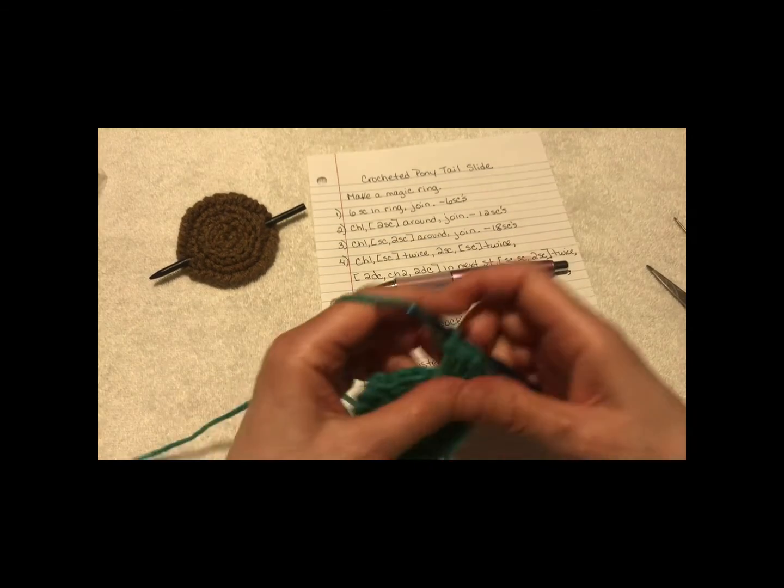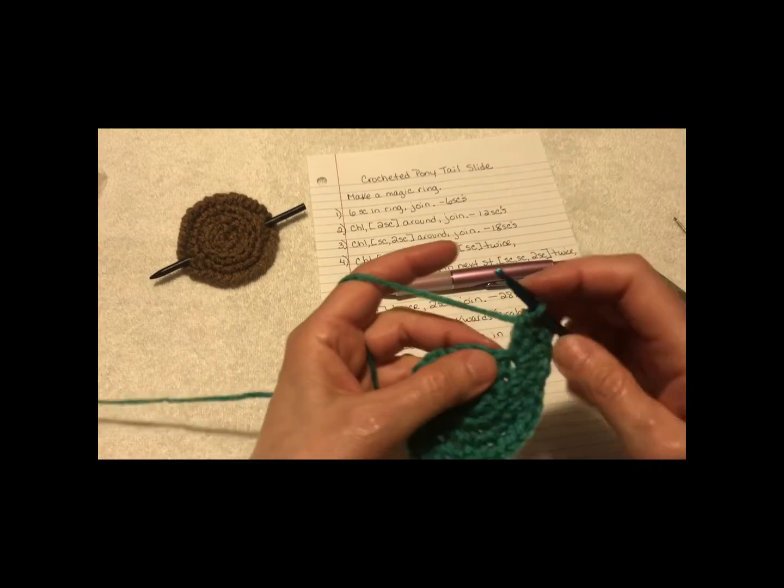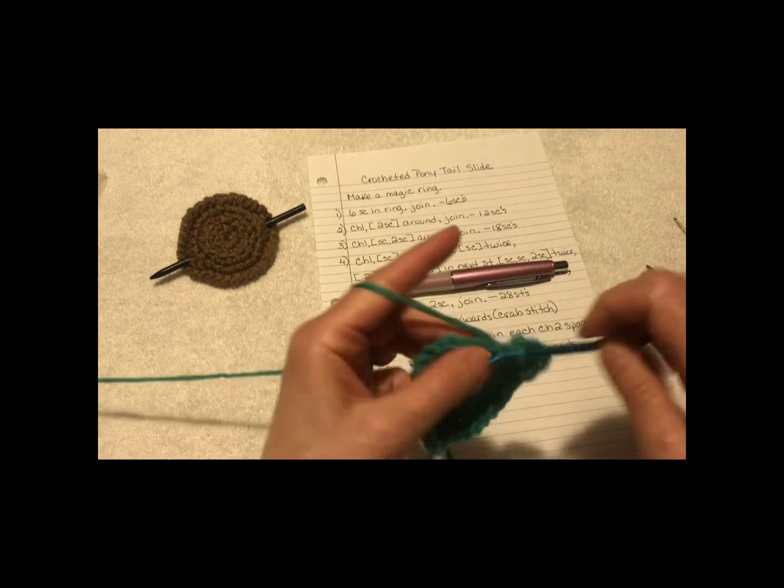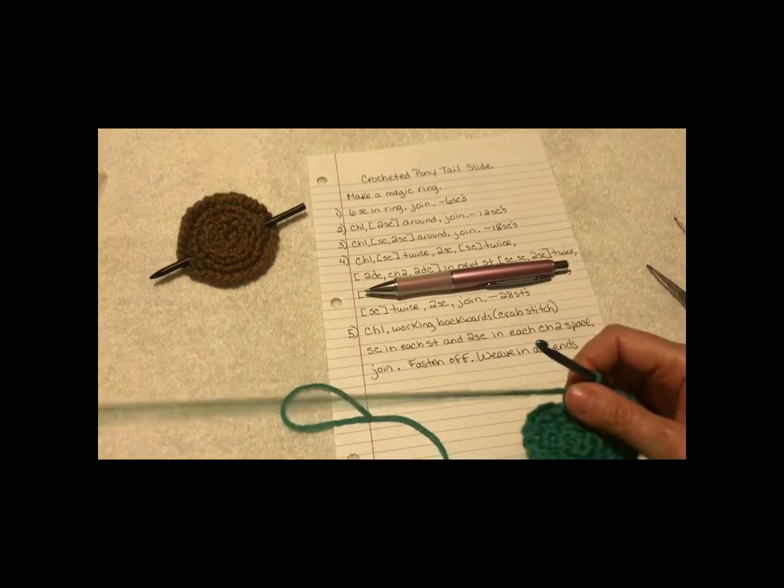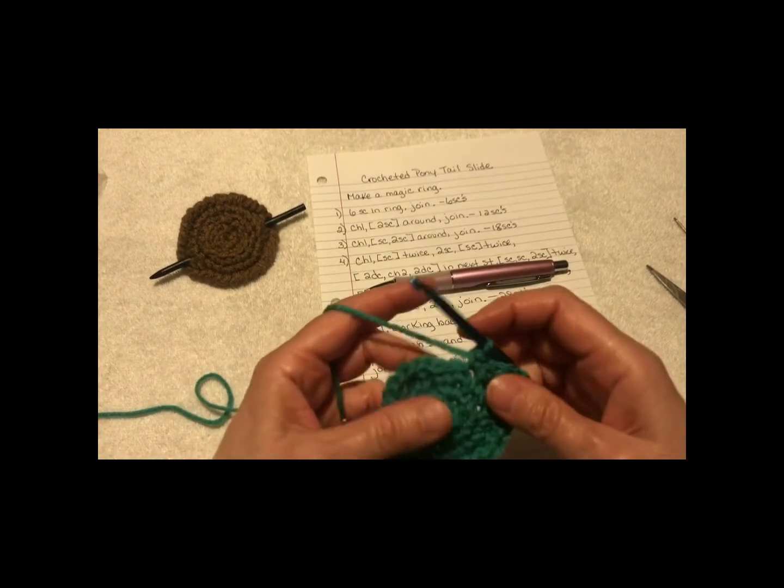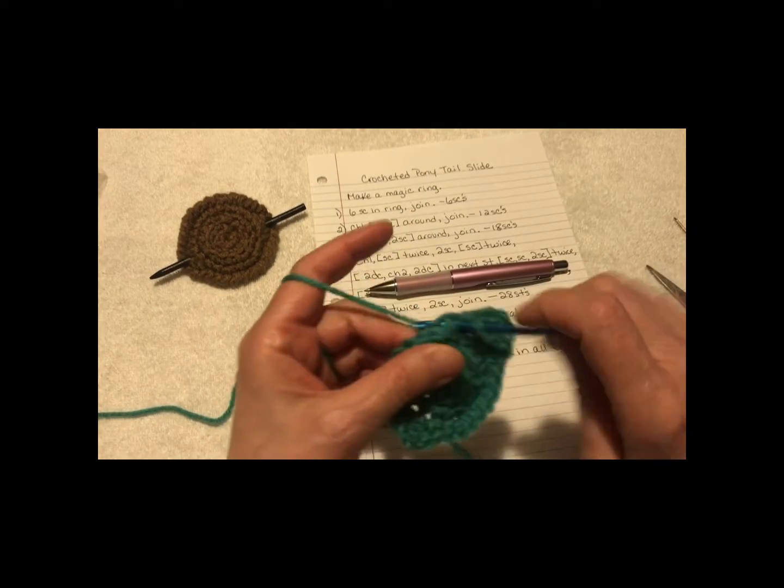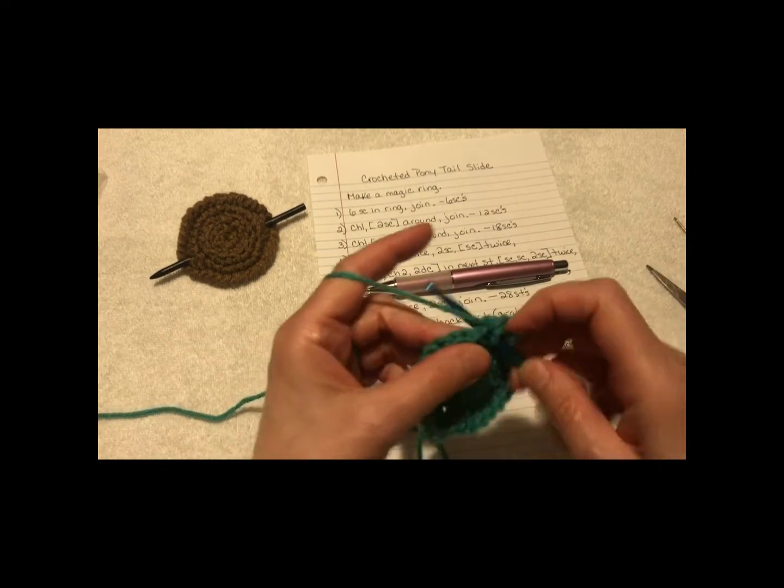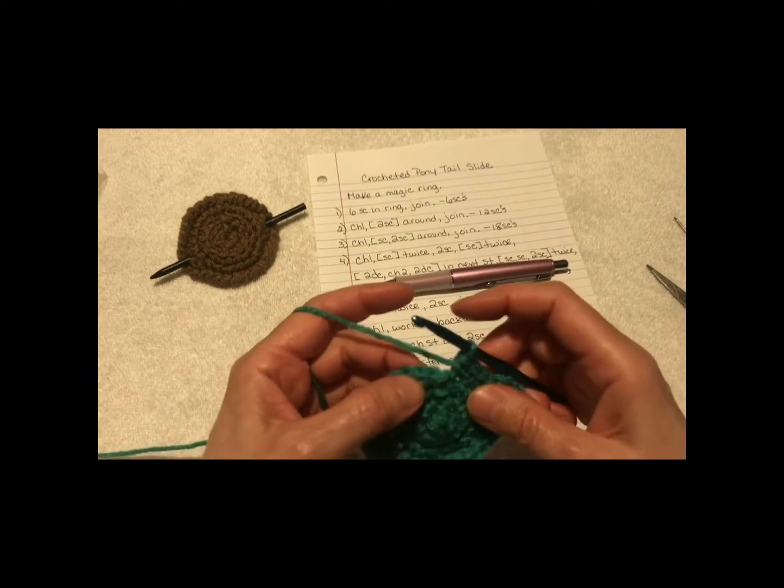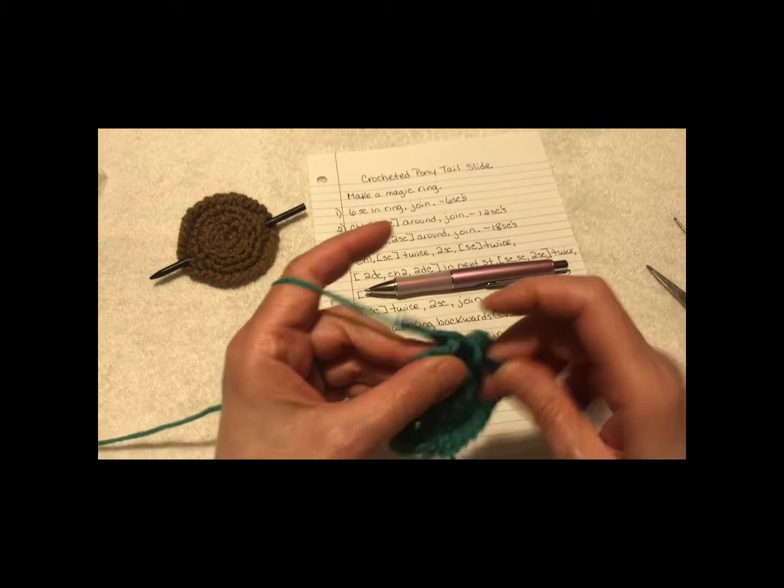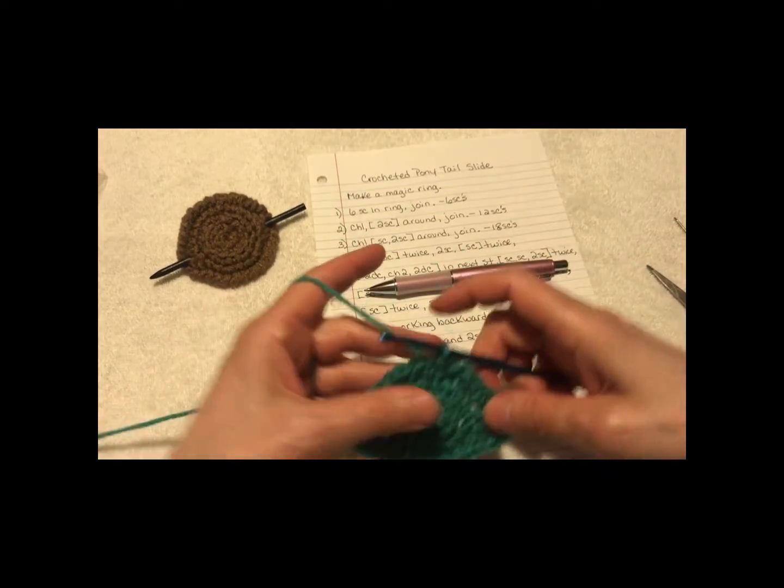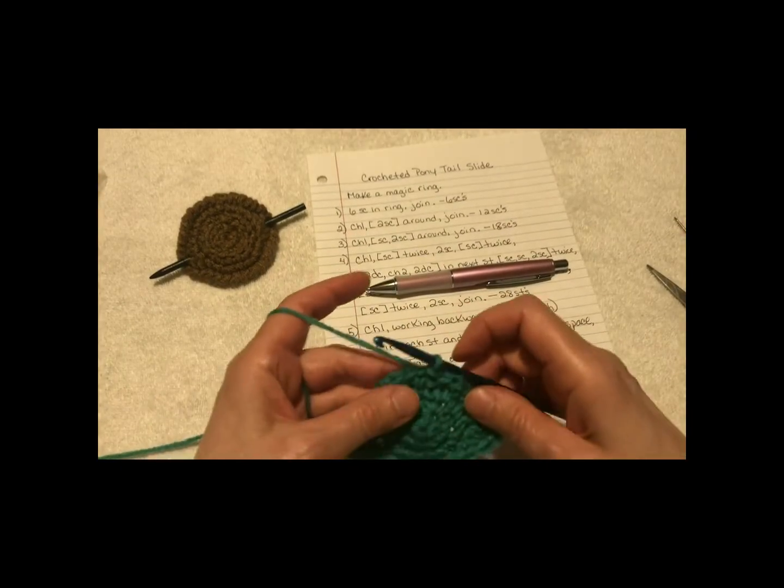Single crochet twice. So, in the next stitch, you single, next stitch, you single. And then, in the last stitch, you're going to do two single crochets, and then another single in that same stitch. Join. And that's what that looks like. And you'll have 28 all the way around.